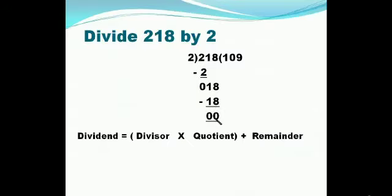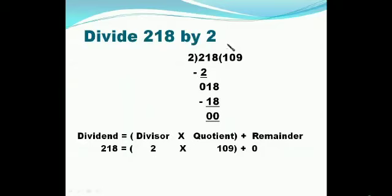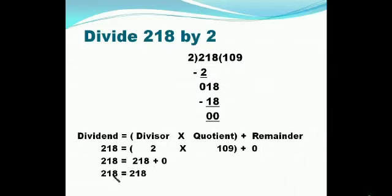We will verify the answer. Dividend = Divisor × Quotient + Remainder. So 218 = 2 × 109 + 0. Multiplying 2 by 109 gives 218, so 218 = 218. Both sides are equal, so the answer is verified and the sum is correct.